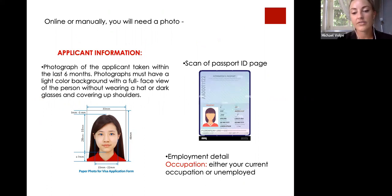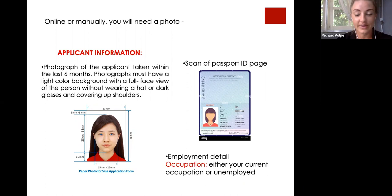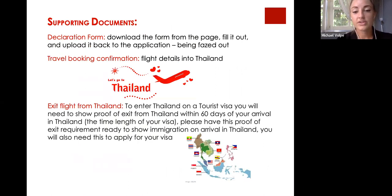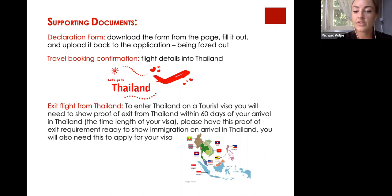You also upload a scan of your passport page, including the page next to it open like a book. State your employment — either your previous employment, current employment, or you can write unemployed. Then provide your travel information, which we will send to you so you can attach it there. For supporting documents, the declaration form is gradually being phased out, so you may or may not need it depending on what questions are asked.